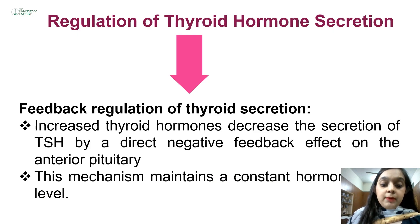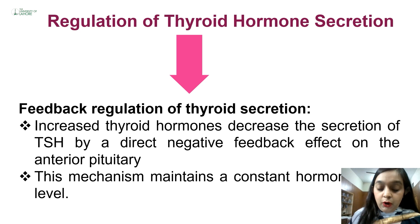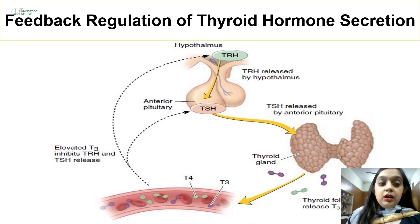Regarding feedback regulation: increased thyroid hormone decreases the secretion of TSH by a direct negative feedback effect on the anterior pituitary. This mechanism maintains a constant hormonal level in the body. The feedback mechanism is further classified into two forms: positive feedback and negative feedback.